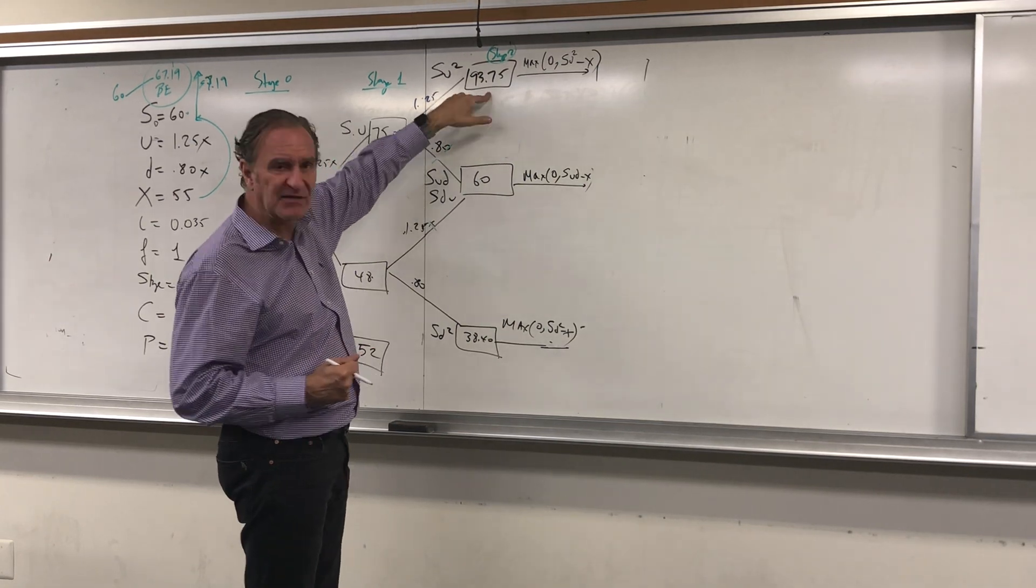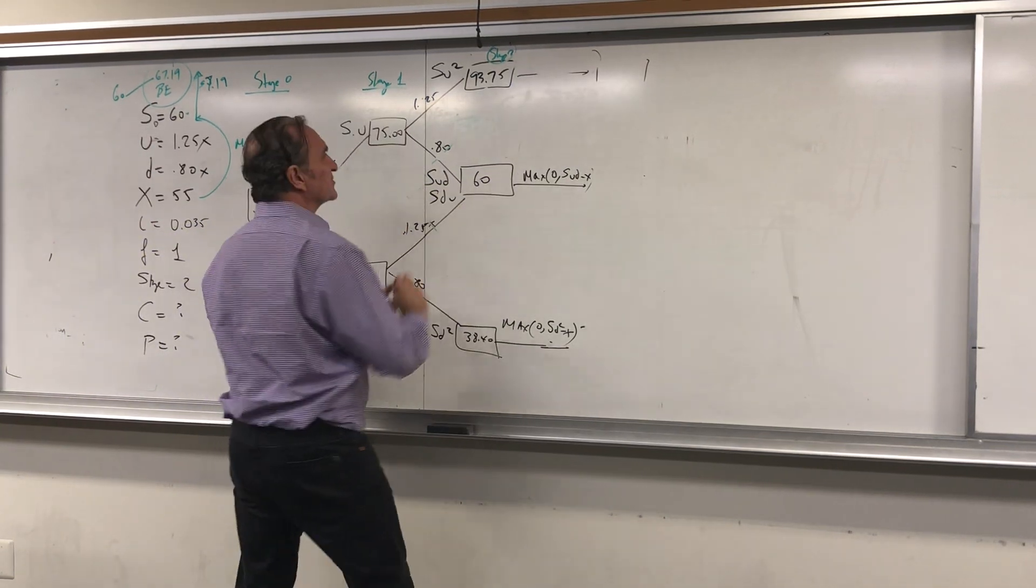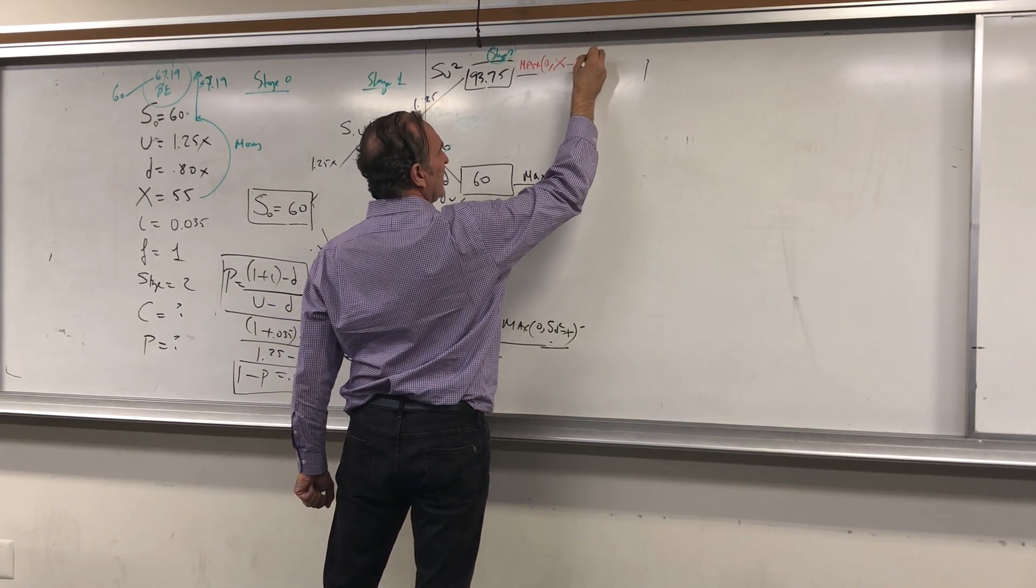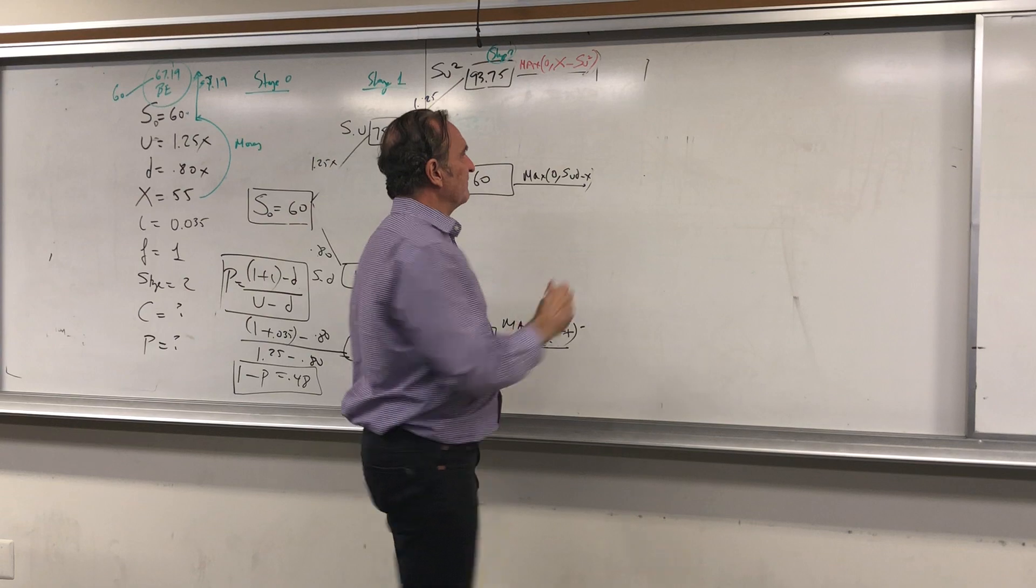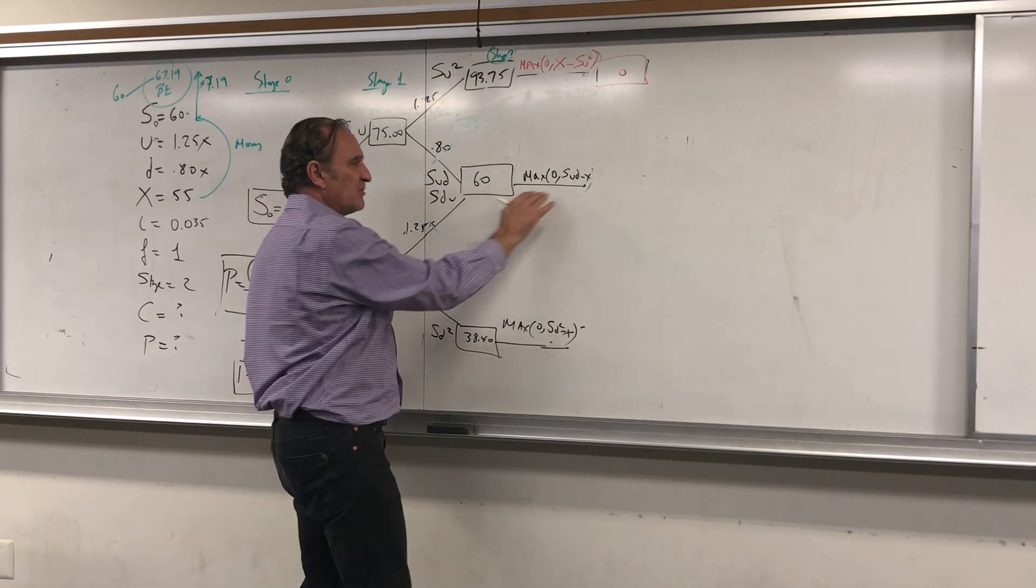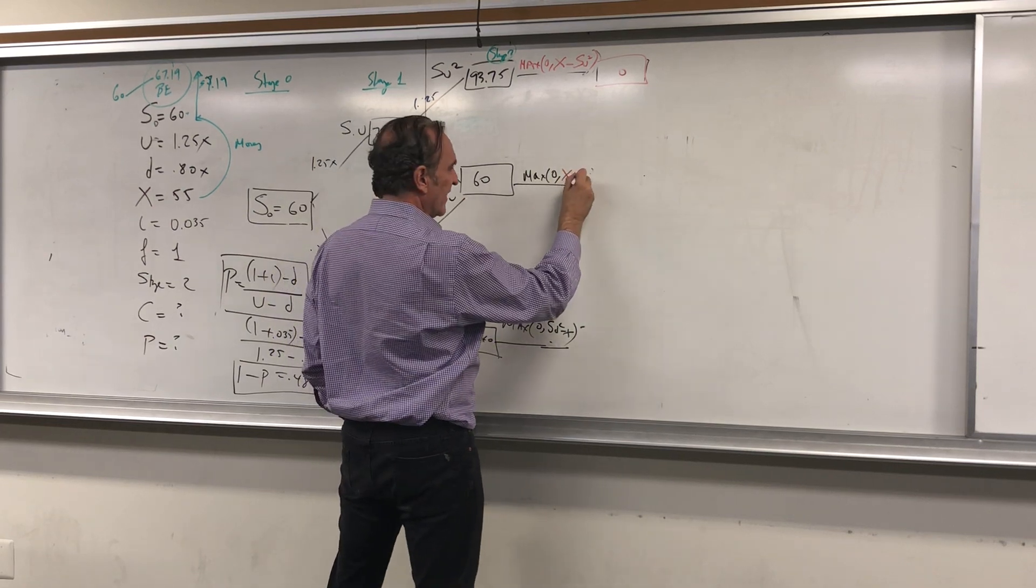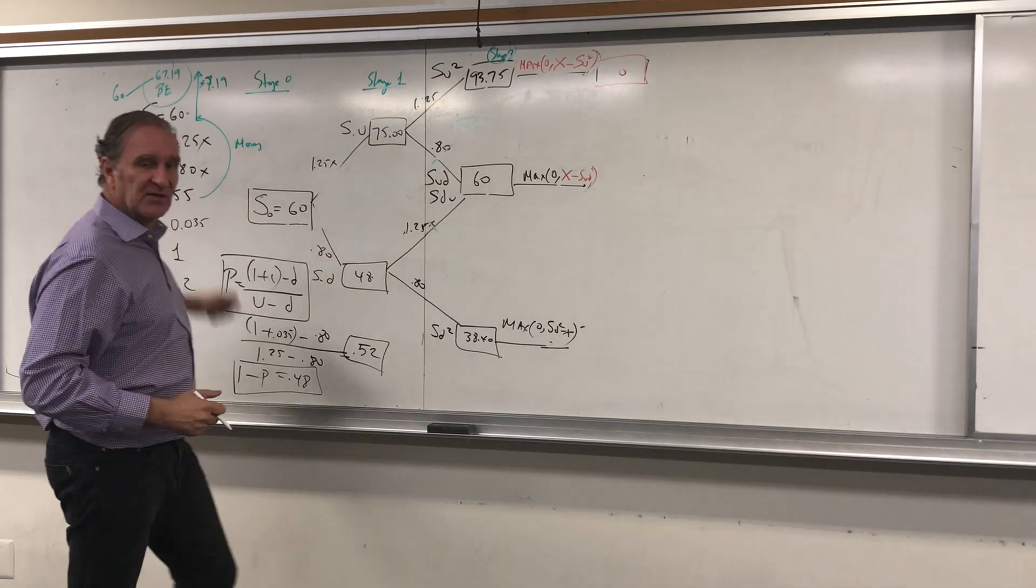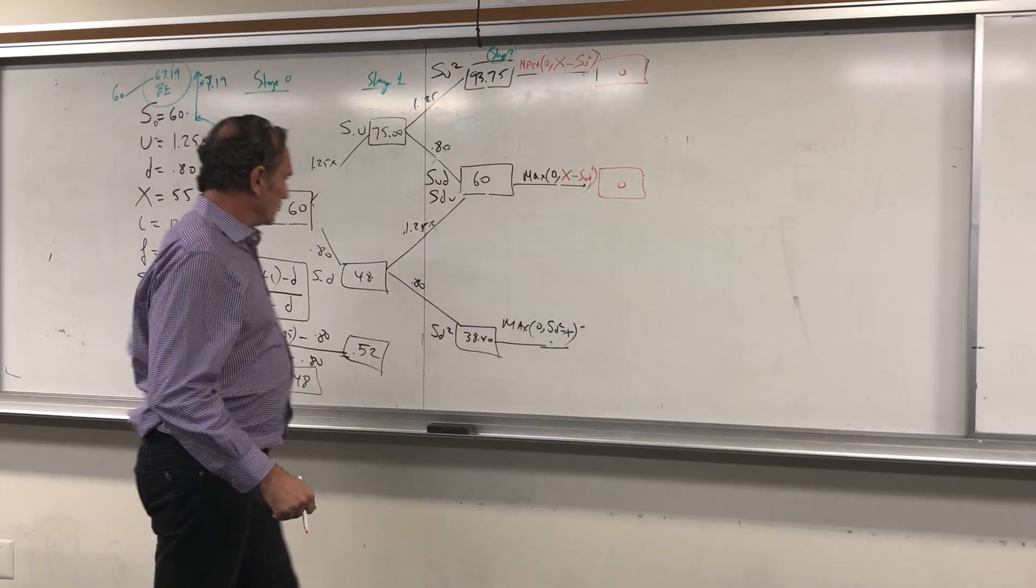Of course you won't exercise because 9375 is higher than X, so the maximum is zero (X minus S). In this case you're going to let it expire, so the payoff is zero. Then you ask the same question here: is max(0, X minus Sud)? In this case it's 60 and X is 55, so you're going to let it expire. So your option, the put option, is again zero.